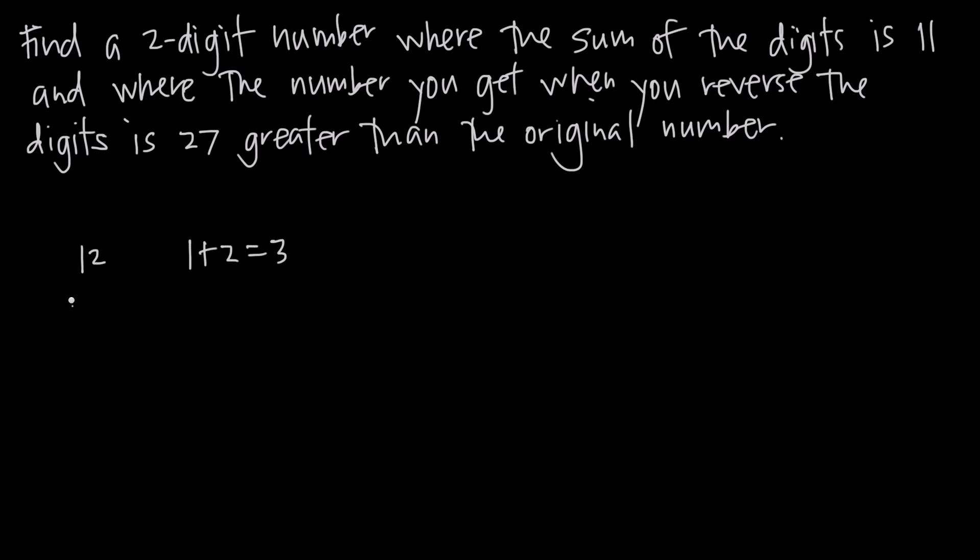And when we reverse the number, so when we reverse the tens and the units place and we call the number 21 instead of 12, then the value of the reverse number, 21, is 9 greater than the original number, 12. So we have 12 plus 9 equals 21.